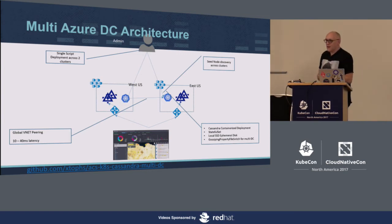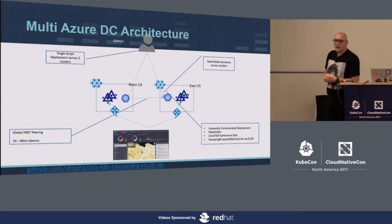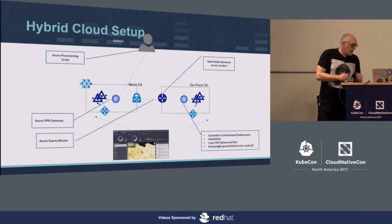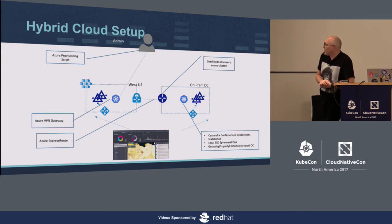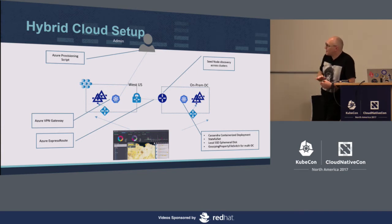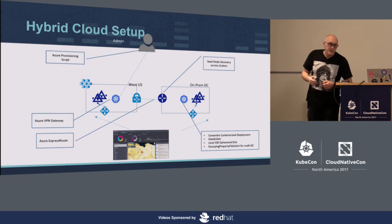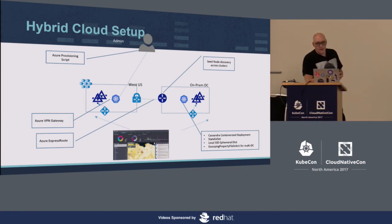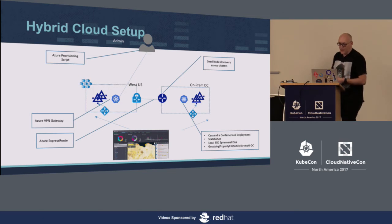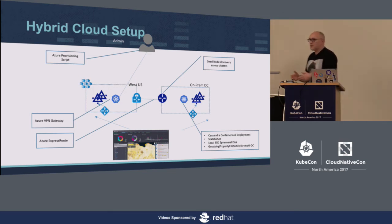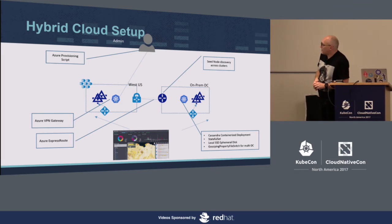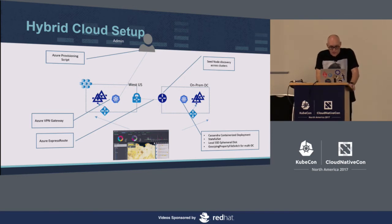Not everybody wants two Azure data centers. We have some customers that say they have their own data center and would like to do high availability. Can you stand up a cluster that would be a hybrid Cassandra ring over on-prem — take the Cassandra they already have and extend it into the cloud? We can certainly do that with the networking connectivity features between a cloud provider and Azure. In this case it would be Azure ExpressRoute, connecting the on-prem environment and the cloud environment to form a single network, and then we bring up Cassandra on those two environments.